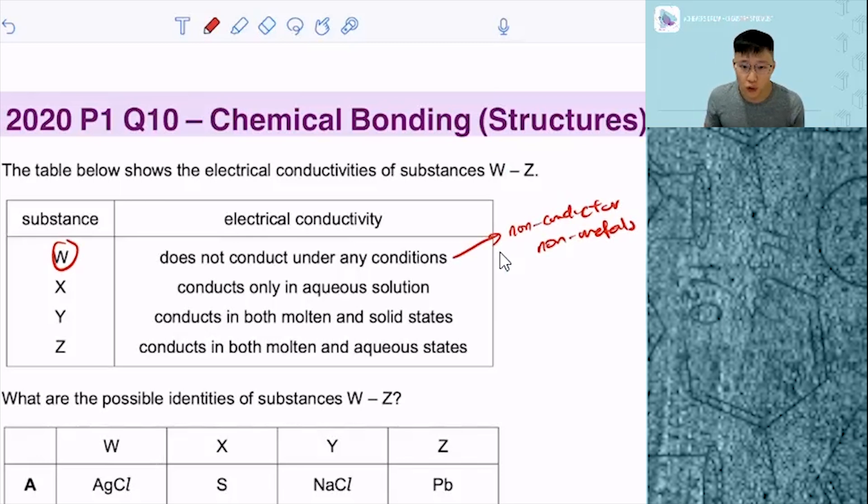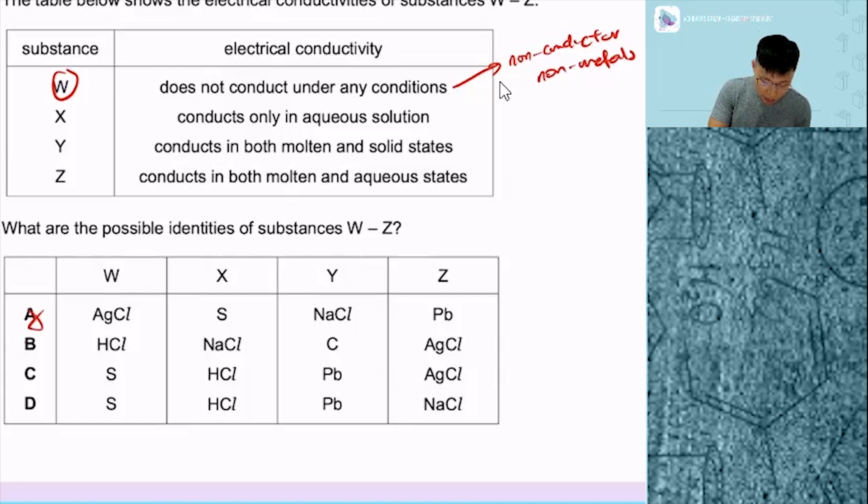So if you do not conduct it under any conditions, I will eliminate A and B straight away because it makes sulfur the best option over here. So next one, conduct only in aqueous solution, is HCl.